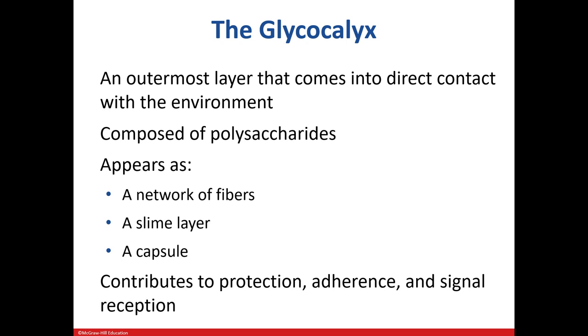The glycocalyx is carbohydrate-rich and can be a slime layer or capsule, as we saw in the last chapter. A eukaryote can use it for protection along with attachment.